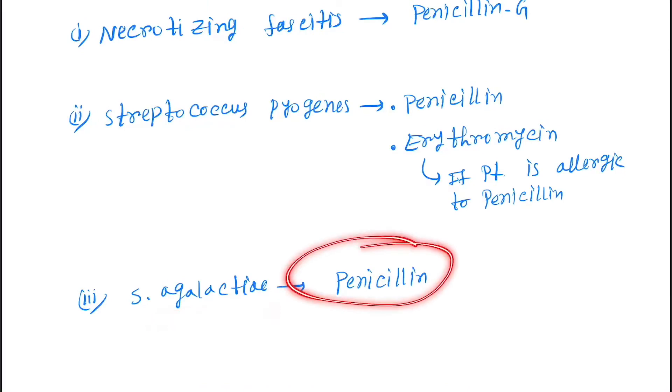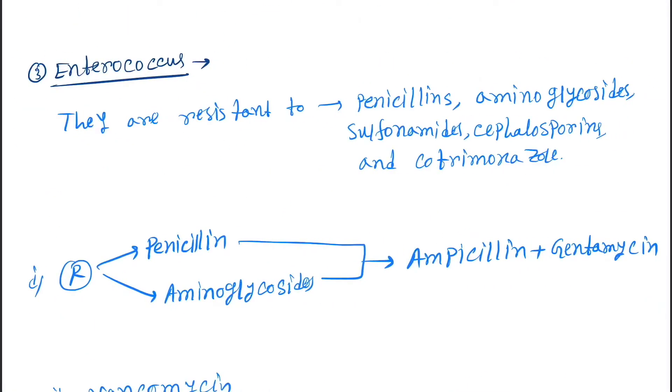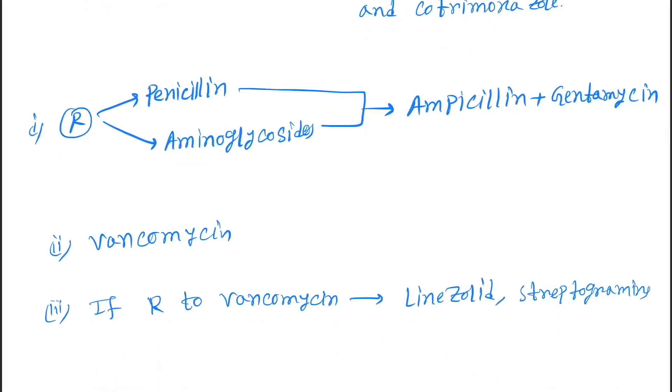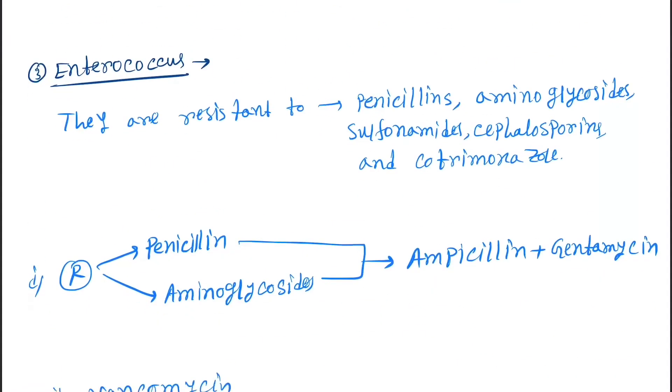Now Enterococcus. This is very dangerous because they are resistant to penicillin, aminoglycosides, sulfonamides, cephalosporins, and cotrimoxazole. So if they're resistant to penicillin and aminoglycosides, the drug of choice is ampicillin plus gentamicin, the combination of drugs.